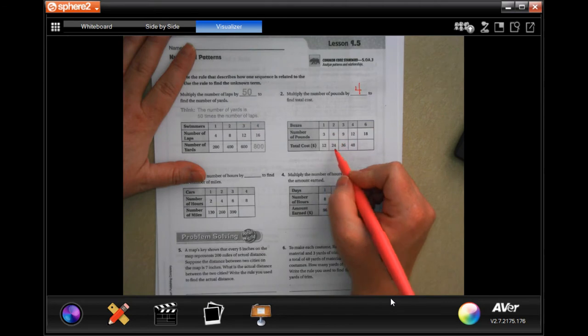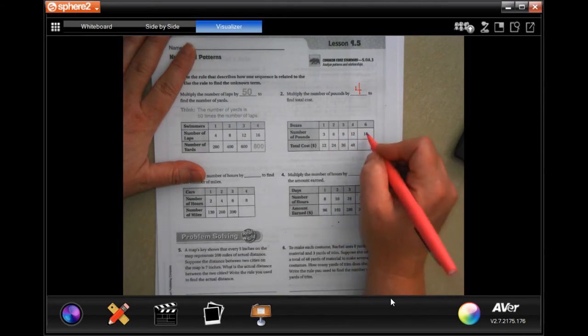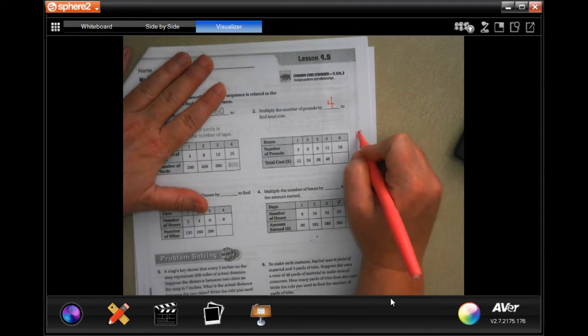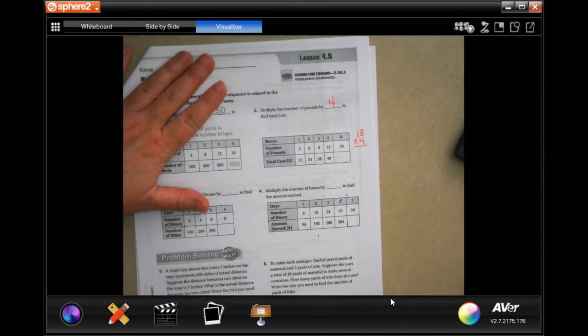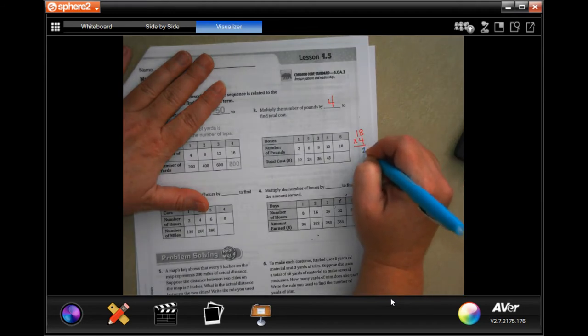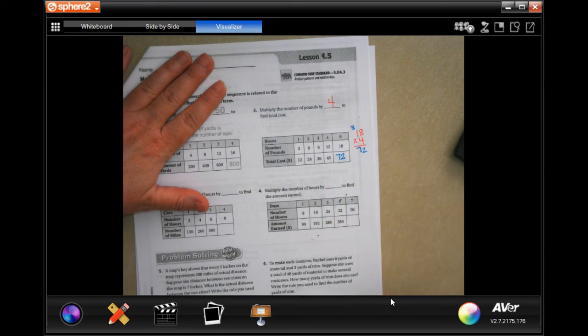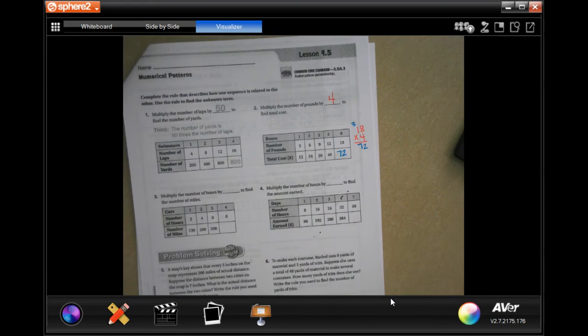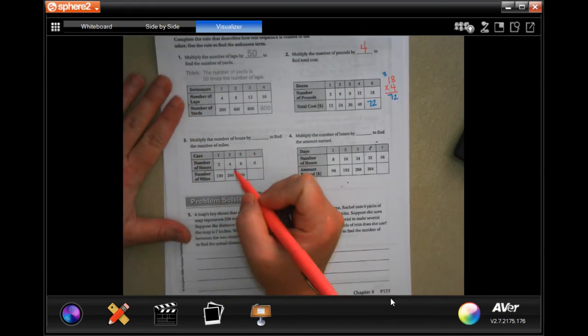We're multiplying that by 12. Six times four is 24, nine times four is 36. So 18 times four, well I don't know that off the top of my head, so I'm going to calculate 18 times four right here. Four times eight is 32, carry that three. Four times one is four plus three equals seven, so 72.